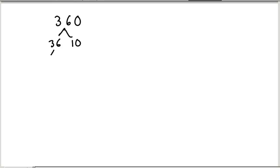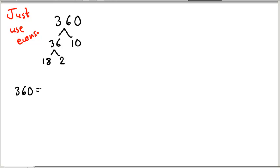To appreciate this, let's pretend for the time being that we only had even numbers to work with and try doing the same type of factorizations. So 360, I could say, is 36 times 10. 36 is 18 times 2. And 18 — I'm stuck. I can't break that up if we only have even numbers. So we would conclude that 360 is 2 times 10 times 18, and that's as far as I could go.